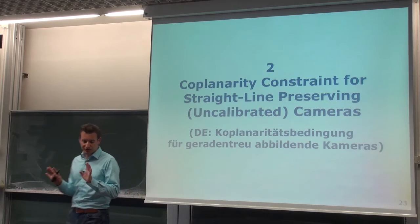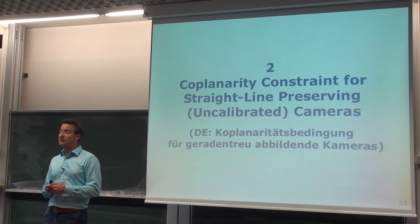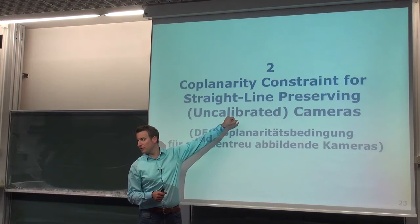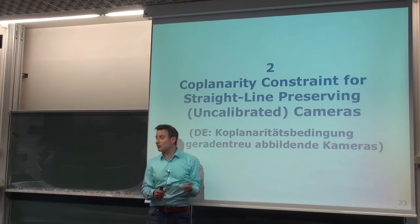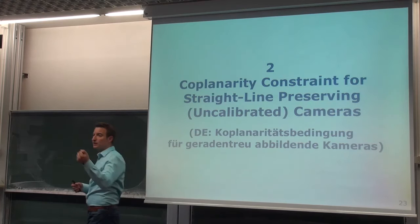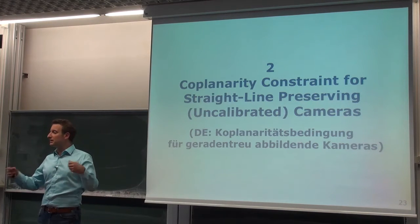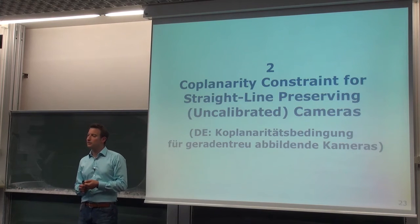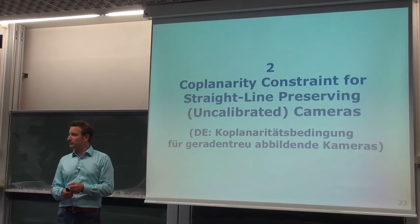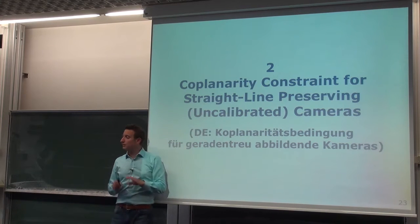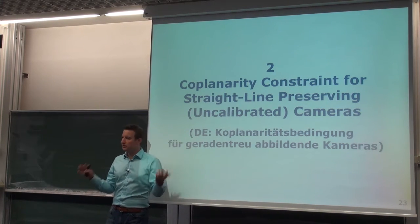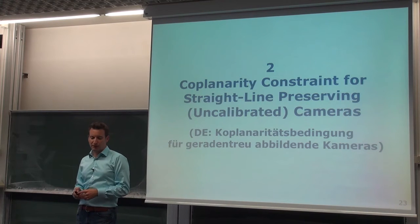The relative orientation between cameras — and we are looking into uncalibrated cameras. That means they are only straight-line preserving: a straight line is mapped to a straight line, so there are no nonlinear errors. But we don't make any further assumptions. We are working with completely uncalibrated cameras, assuming 11 degrees of freedom per camera.